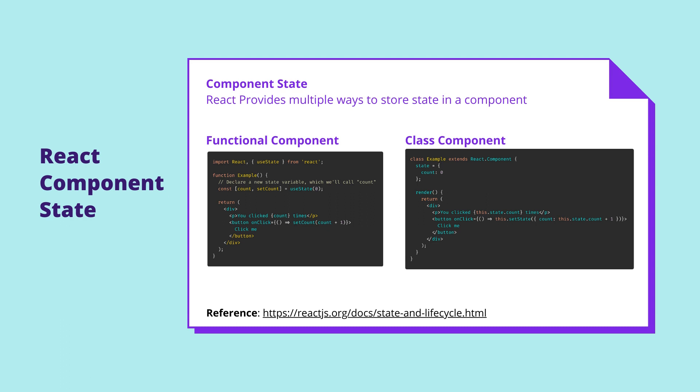React provides a robust toolkit of functions and hooks to manage state at the component level, such as useState for a functional component, or this.state for a class component. These work great for storing component-level data — for example, a particular item in a list the user has selected, or what the user has typed into an input but not yet submitted. This is component-level data, as there shouldn't be a need for other components to be aware of it. On the other hand, data not contained in a single or small collection of components is most likely an application-level state, and should be managed by a more purpose-built solution.